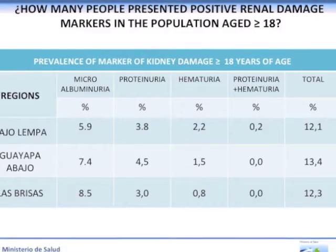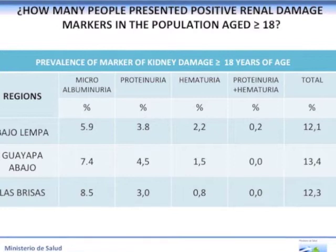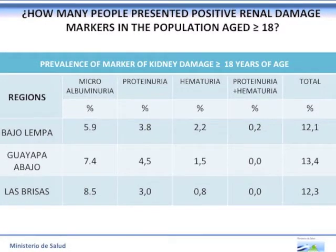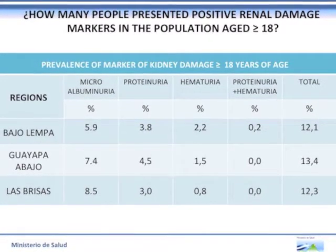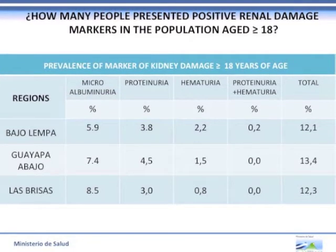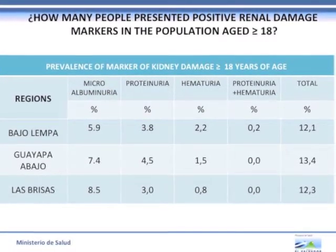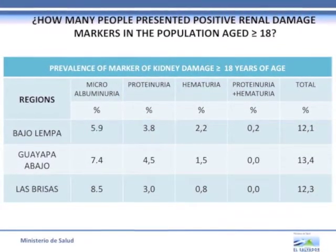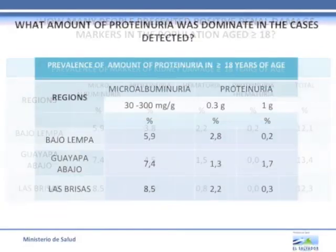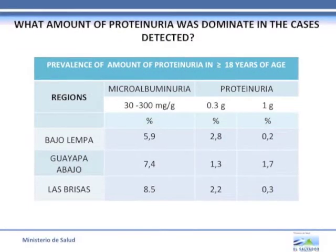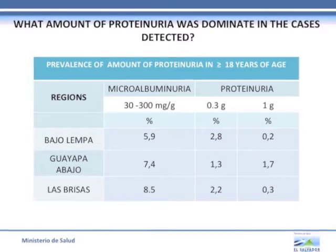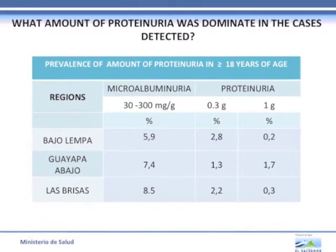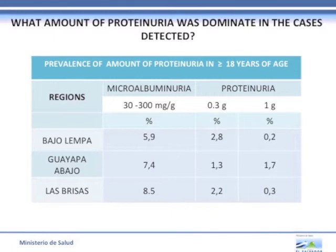How many people presented positive renal damage markers in the adult population? The amount of people with kidney damage markers in the urine was high in all communities. The predominant marker of renal damage was microalbuminuria, followed by proteinuria. The presence of hematuria was very low. The proteinuria detected in most cases was less than 1 gram per liter.